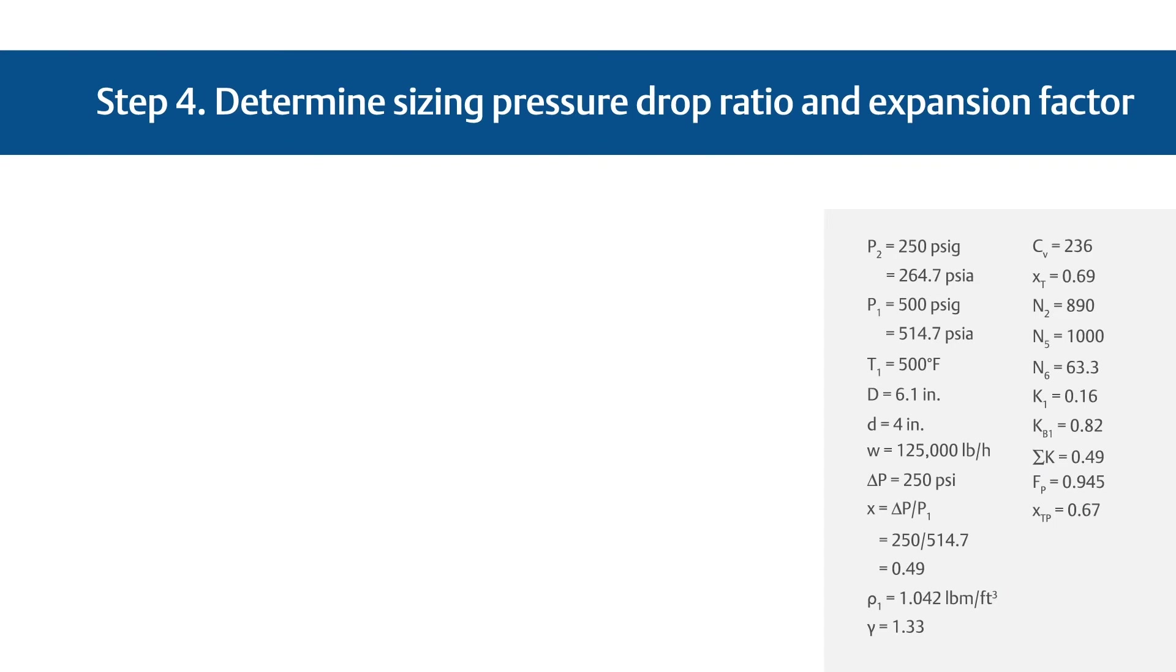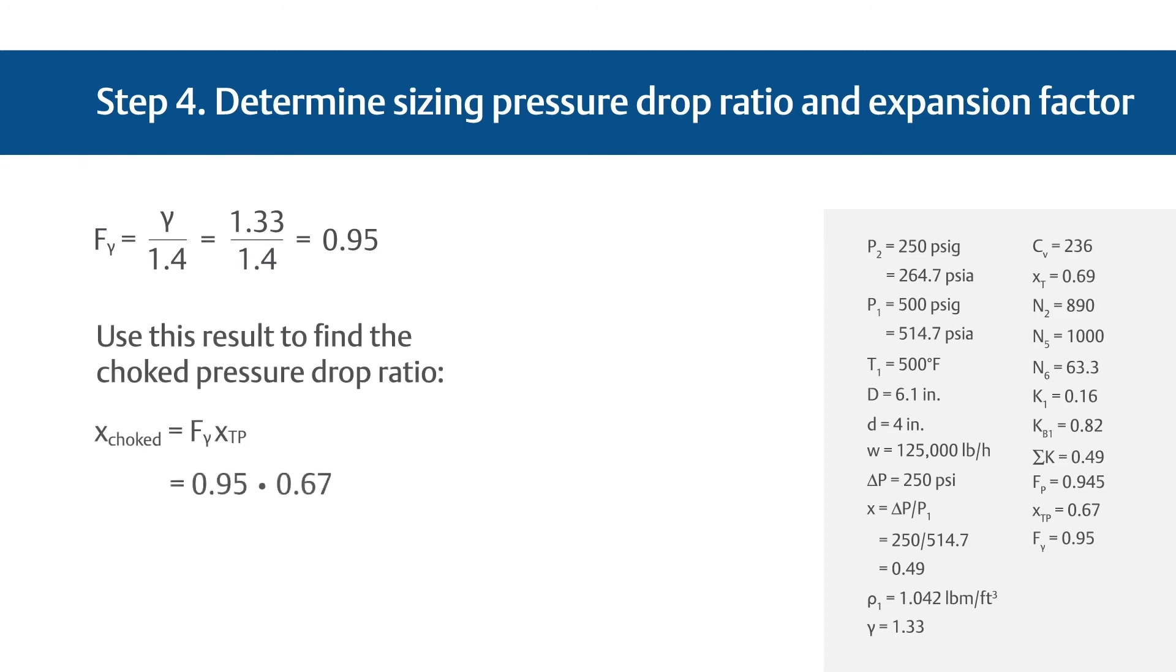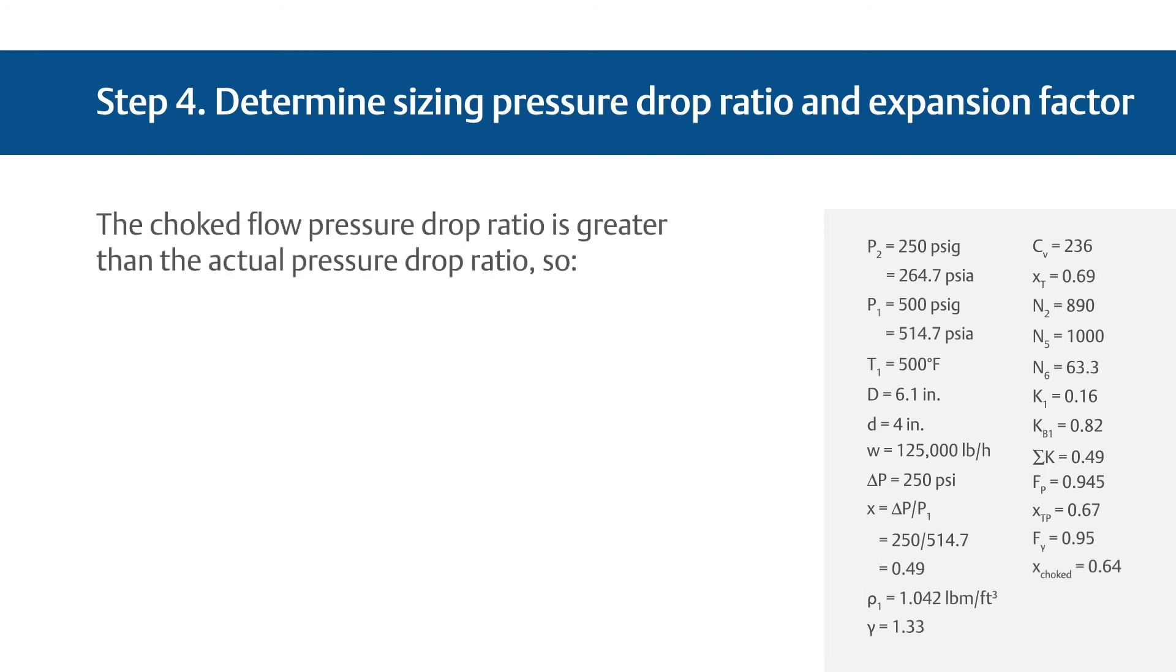Step 4, determine the pressure drop ratio to use for sizing, or X sub sizing, and the expansion factor Y. Start by calculating the ratio of specific heat's factor, F sub gamma. Use the standard F sub gamma equation. Apply the gamma value of 1.33 for a value of 0.95. Use this result to find the choked pressure drop ratio. Use the standard equation. Plug in the variables for a result of 0.64. The choked flow pressure drop ratio is greater than the actual pressure drop ratio. So X sub sizing equals X, which equals 0.49. Then plug in the variables to find the expansion factor, Y, for a result of 0.75.